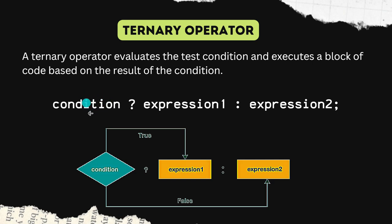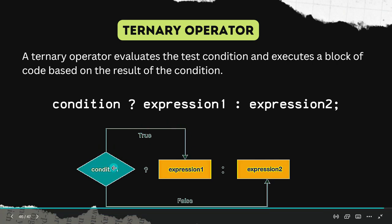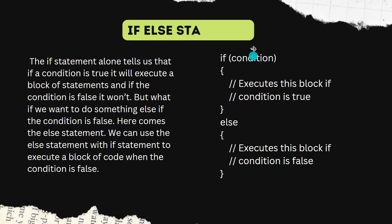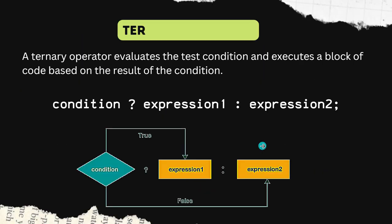From the flowchart we can understand: first we check the condition. If the condition is true, expression one is evaluated. If the condition is false, expression two is evaluated. Expression one and expression two are evaluated just like the if-else block — condition true executes one, condition false executes the other. The only thing that changes here is the syntax.